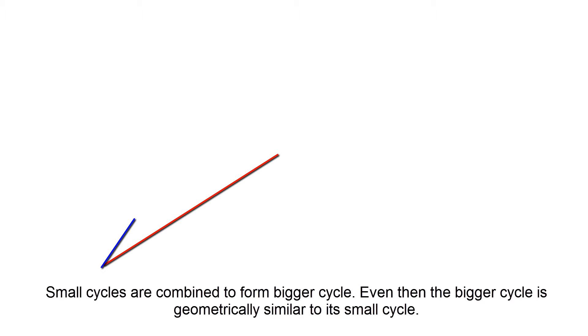Small cycles are combined to form bigger cycles. Even the bigger cycle looks similar to the smaller cycle. Hence, Forex and stock market are Fractal as long as they repeat up and down.